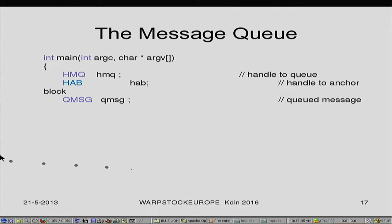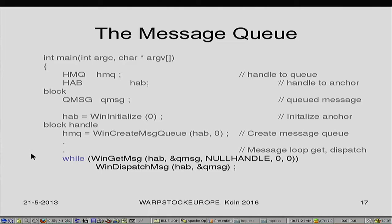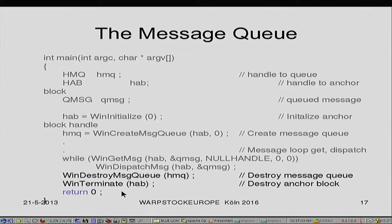The message queue — how do you create it? You define a handle to the queue, an anchor handle, and a queued message. Simply say initialize, which gives you your anchor handle, then create the message queue. The next bit is to get a message from the queue and dispatch it to whichever procedure. At the end, it falls through when the WM_QUIT message comes, and you destroy the message queue, destroy the anchor block, and you're finished. That's the main part of the program — the bit where you know where it starts and where it ends.